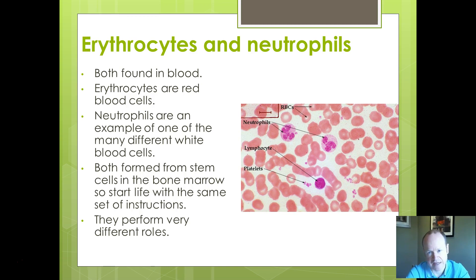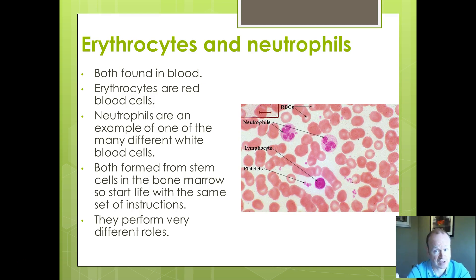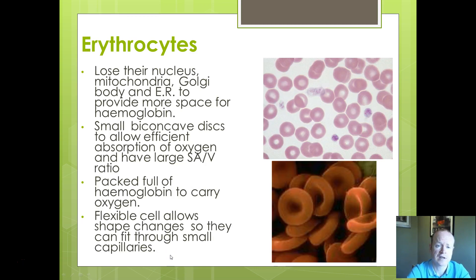For the specification, you need to know erythrocytes as red blood cells. Erythro means red, cyte means cell. Neutrophils are an example of one type of white blood cell — there are lots of different types, but we'll focus on neutrophils today. Both red and white blood cells come from stem cells in the bone marrow, which differentiate to produce particular types of cells. They have very different structures and roles. Erythrocytes don't have a nucleus — they lose it during development — and they don't have mitochondria, Golgi body, or endoplasmic reticulum either.